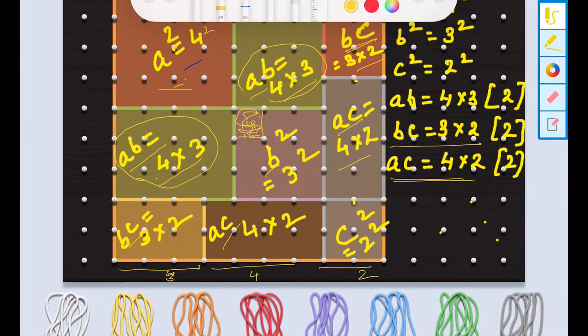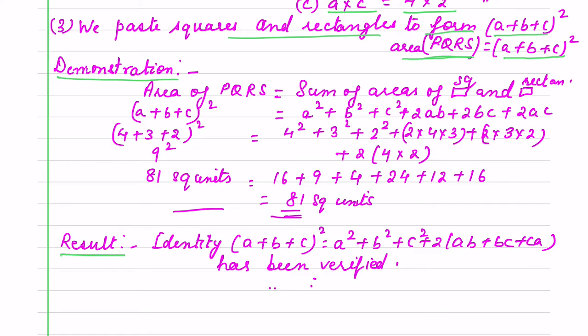And if you see here also we have 2, 4, 3. Here it is 3 and it is 4. So we have right demonstration where area of PQRS is sum of areas of square and rectangle.